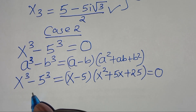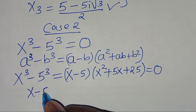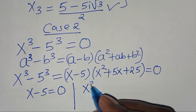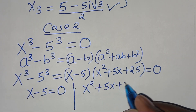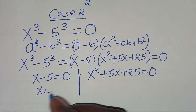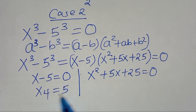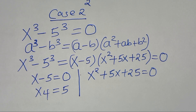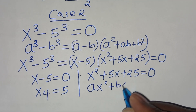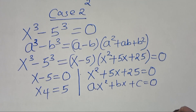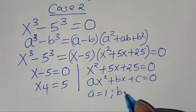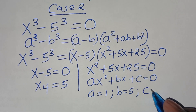So here we have two parts. The first part is x minus 5, this is equal to 0. The second part is x squared plus 5x plus 25, this is equal to 0. This implies that x4 is equal to 5. The next part is a quadratic equation of the form ax squared plus bx plus c equals 0, where a is equal to 1, b is equal to 5, and c is equal to 25.